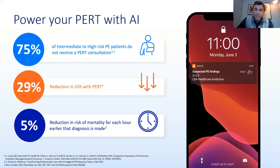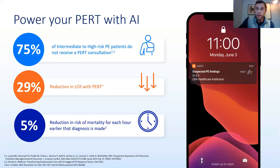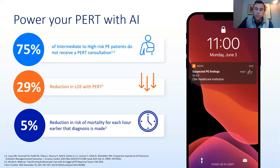Why PERT, why AI, why today, why this work, why this webinar? Three unmet needs stand out when we look at how artificial intelligence can immediately make an impact. The first is rates of PERT consultation — awareness, communication, how cases are prioritized from imaging and radiology workflows, how findings in the emergency department reach the ICU. Intermediate to high-risk PE patients frequently don't receive a consultation. That is problem one.